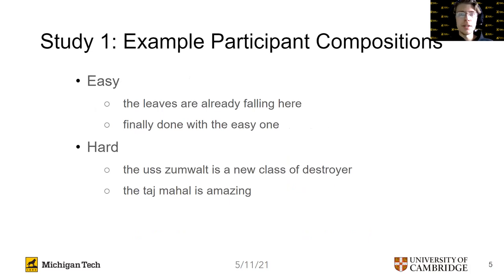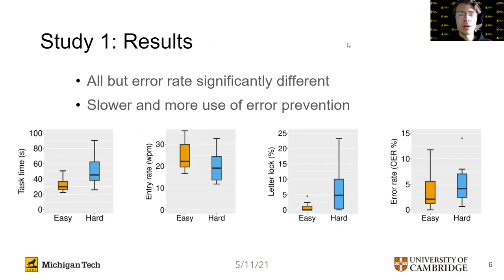Some example participant compositions in the easy condition included: "the leaves are already falling here" and "finally done with the easy one." In the hard condition, some examples included: "the USS Simult is a new class of destroyer" and "the Taj Mahal is amazing." The results from study one showed that phrases composed in the hard condition took longer, were typed slower, and utilized the lock letter feature more often.